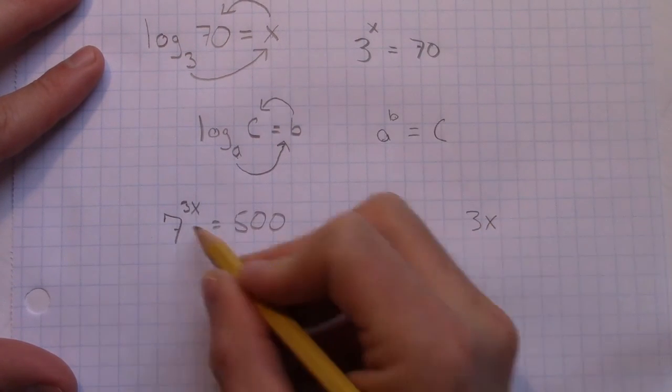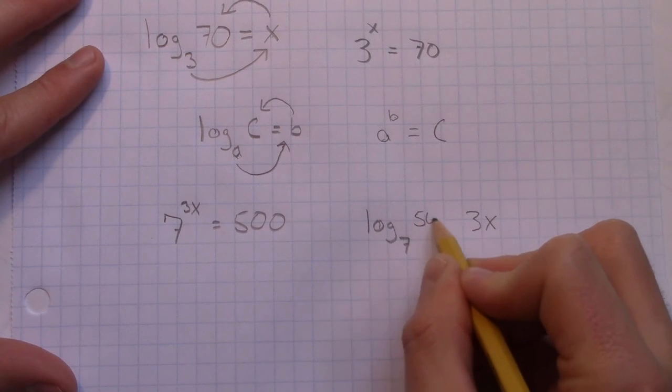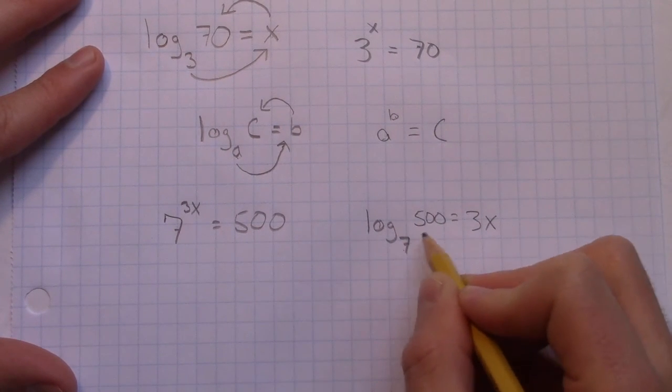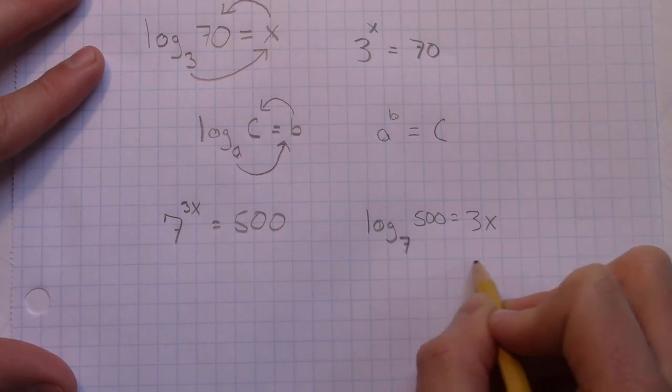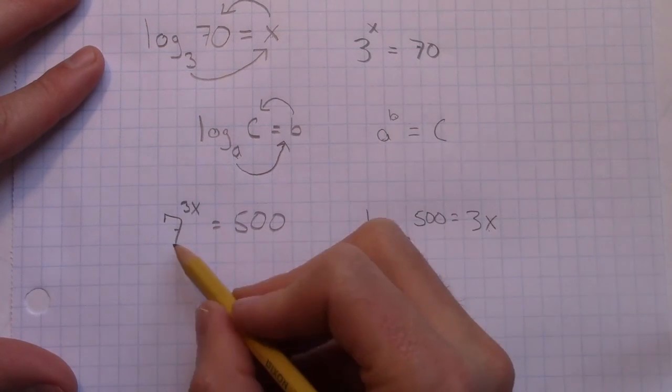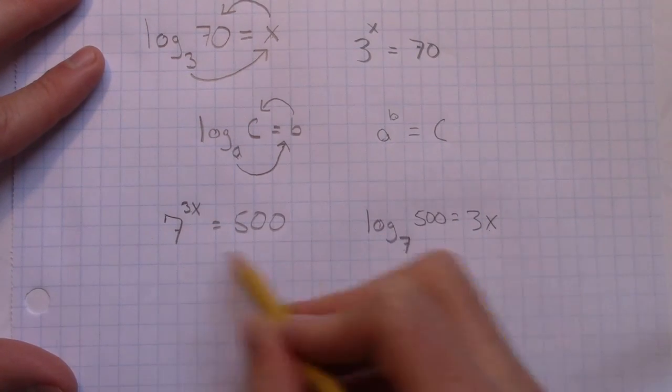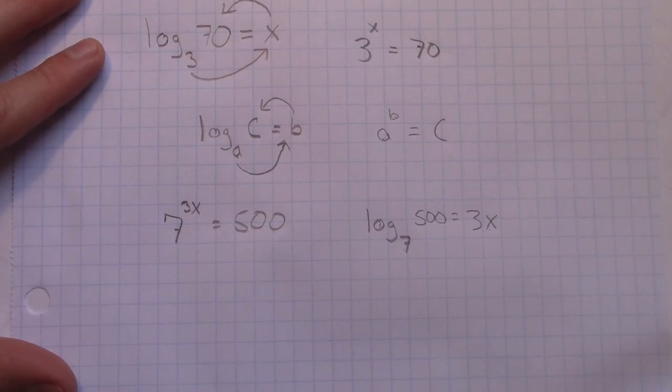The answer, so to speak, is the exponent, and that is 500. So this is really log base 7 of 500 equals 3x, because 7 to the power of 3x equals 500. So these are examples of practice problems. Good luck.